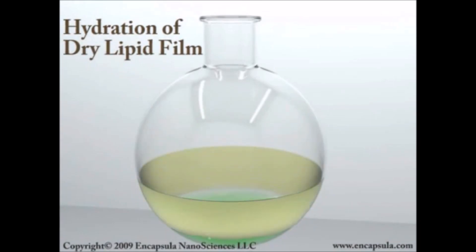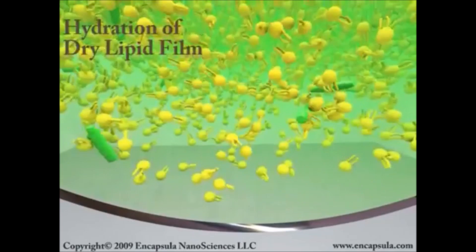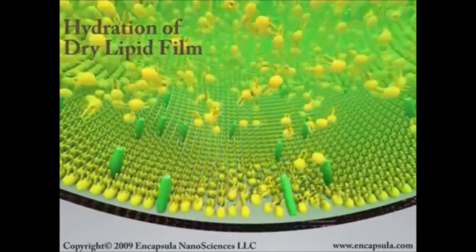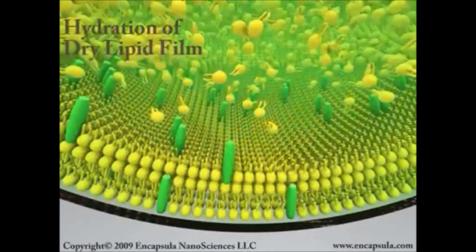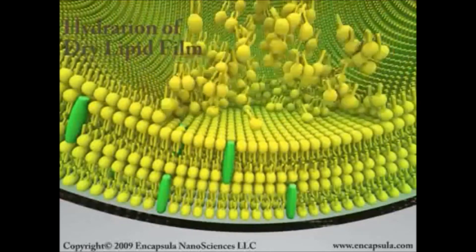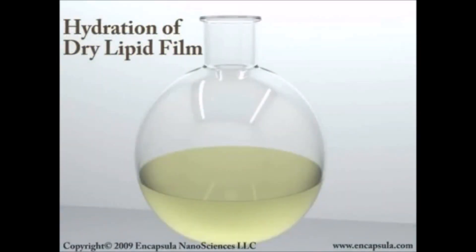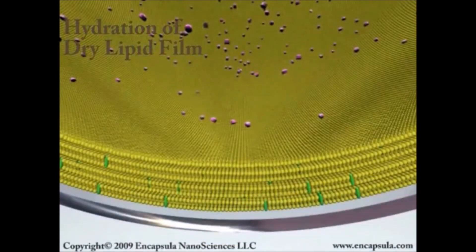The simplest method for preparing liposomes is hydration of dry lipid. The lipid is dissolved in organic solvent along with any lipid-soluble compounds to be incorporated into the liposomes. The solvent is commonly removed by rotary evaporation, resulting in a thin film of dry lipid. Some solvents can be removed by lyophilization, resulting in a dried lipid cake. An aqueous solution containing water-soluble compounds to be encapsulated is then added to the lipid film or cake to hydrate the lipid and form the liposomes.